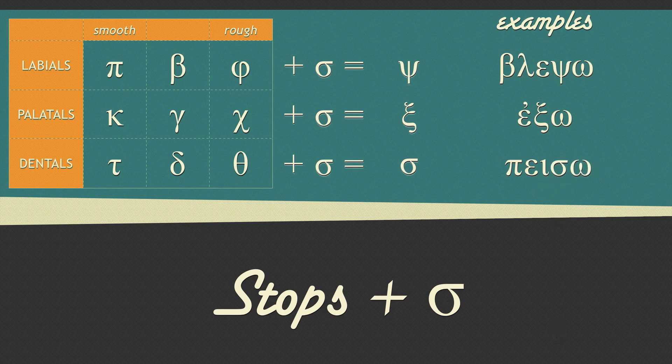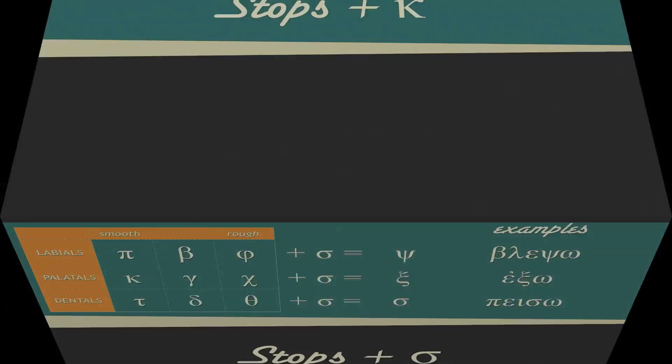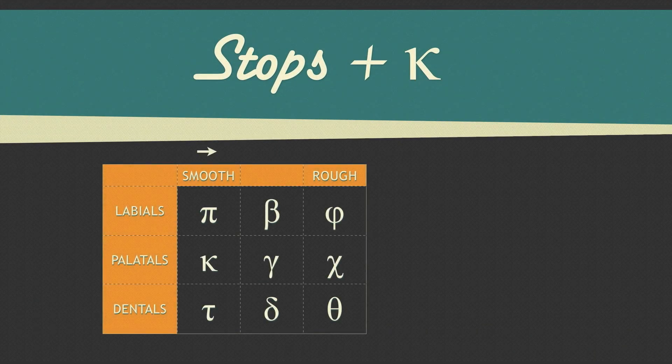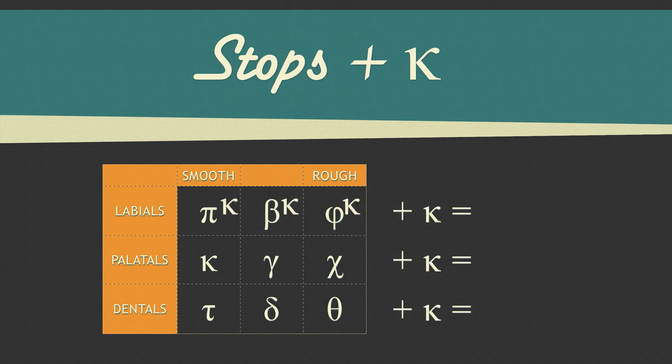Now remember that I said there are two copycats that try to be as nasty as the sigma. A kappa causes changes to stops by sliding from smooth to rough. Here's what I mean. If a word ends in a p or a beta and then a kappa is added, the labial becomes the rough labial stop phi and the kappa goes away. The same thing happens with palatals. If a word ends in a kappa or a gamma and a kappa is added, the palatal becomes the rough chi and the kappa goes away.